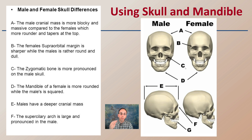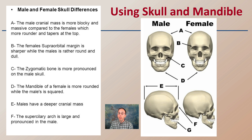The zygomatic bone is basically right under the eye. The mandible of a female is more rounded — you can see that at letter D — while the male is a little bit more squared. Males have a deeper cranial mass; looking at the side view of the skull at E, the distance would be greater for the male than the female. These are a couple of quick comparisons between a male and female skull to help determine the potential sex of that individual.